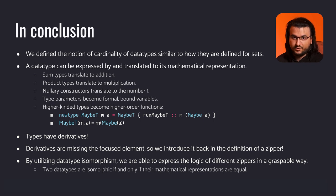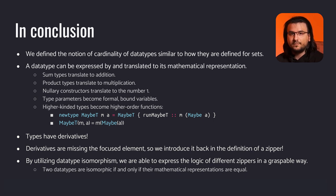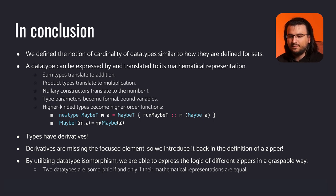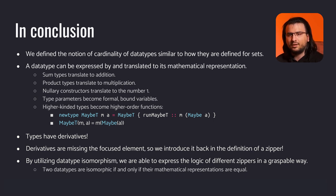A data type can be expressed by its mathematical representation: sum types translate to addition, product types translate to multiplication, nullary constructors translate to the number one, type parameters become formal bound variables, and higher-kinded types become higher-order functions. Consider the maybe transformer — it accepts a type parameter m that in turn can accept a type; in the math expression, maybe t accepts a variable m which is a function. Types have derivatives: a derivative of a type is another type that describes the location in the structure defined by its original type. Derivatives are missing the focused element, so we introduce it back in the definition of a zipper. By utilizing data isomorphism, we can express the logic of different zippers in a graspable way — two data types are isomorphic if and only if their mathematical expressions are equal.